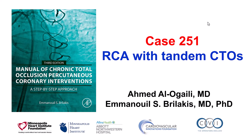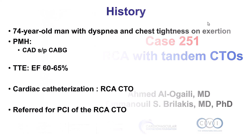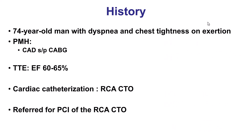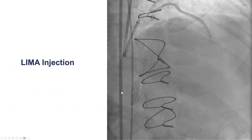This is Ahmed Alugaili and Manos Brilakis presenting case 251 for the Manual of CTO Interventions. This is a case of a right coronary artery with tandem CTOs requiring retrograde crossing through an epicardial collateral. The patient was a 74-year-old gentleman who presented with exertional dyspnea and angina. He had normal ejection fraction and previous coronary bypass graft surgery, and was found to have a right coronary artery CTO.